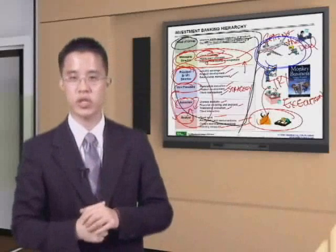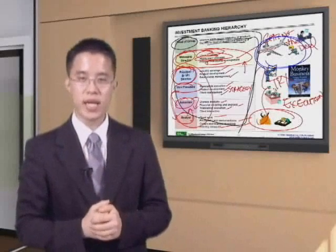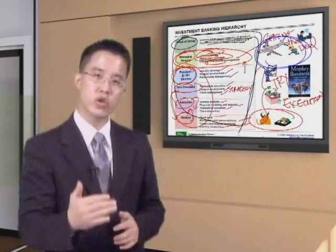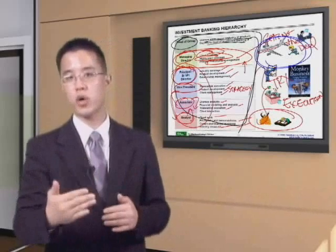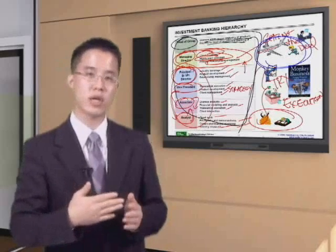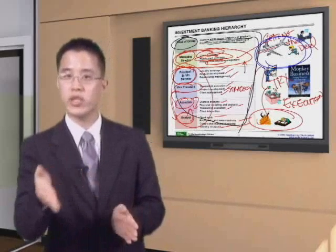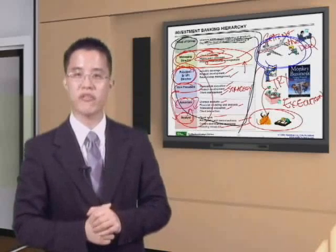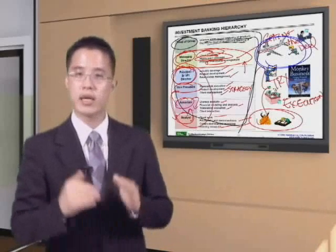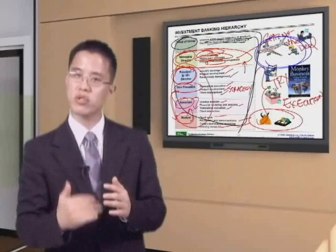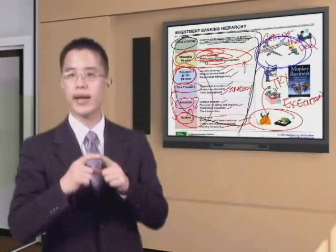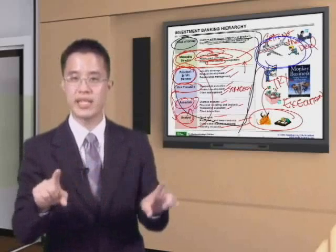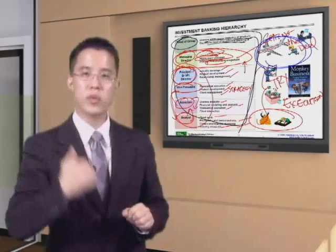In terms of career progression, analysts typically have a two-to-three-year rotation, hired straight out of undergraduate college. An associate is either an analyst promoted to a third-year analyst and then first-year associate, or someone who came straight from business school with an MBA. The vice president is typically an associate who has been promoted, as they are core to deal execution.